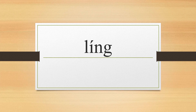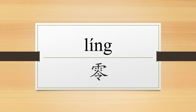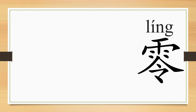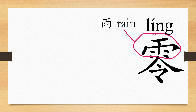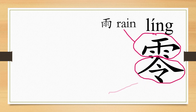Hello, today we are going to learn the character Ling. The character Ling consists of Yu, which means rain, indicating the character's meaning is related with rain, and Ling, which means order, indicating the character's pronunciation is similar with Ling.